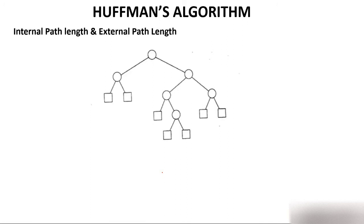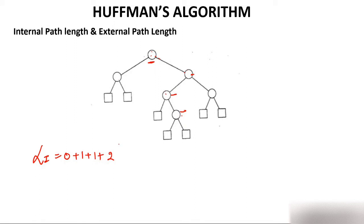Now, internal path length and external path length. For a given two-tree, to calculate internal path length, you sum the distances (levels) of all internal nodes from the root. For example, the root is at level 0, the next nodes at level 1, and so on. Adding up the levels of all 6 internal nodes gives an internal path length of 9.